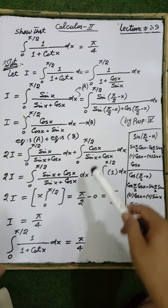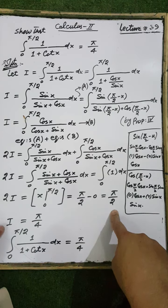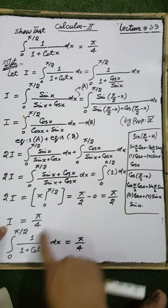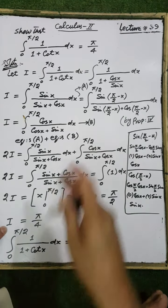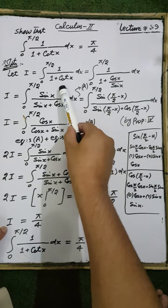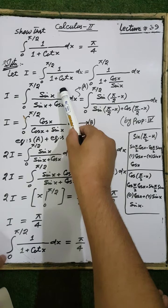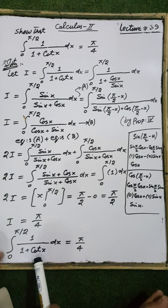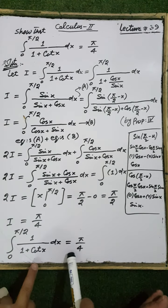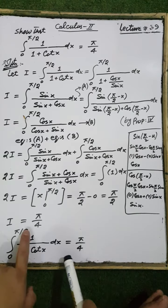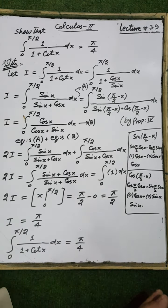The integration of 1 with respect to x is x, evaluated from 0 to π/2. Substituting the upper and lower limits gives π/2 minus 0, which equals π/2. Therefore 2I equals π/2, so I equals π/4. Hence the integral from 0 to π/2 of 1/(1 + cot(x)) dx equals π/4.